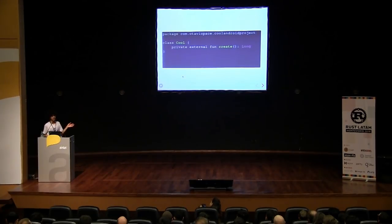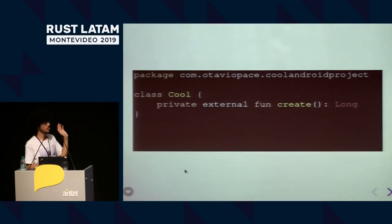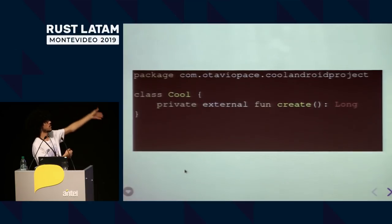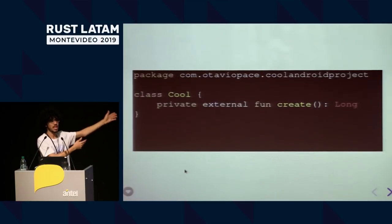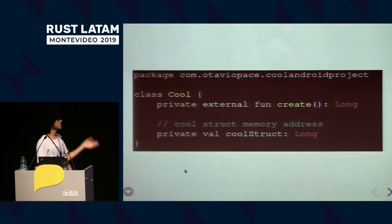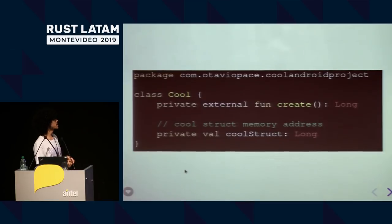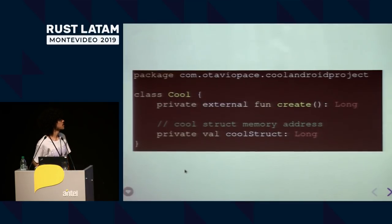On the Java side, you just need to create the signature of that external method — the class name, package name, method name, and return type. You can also create a private value that holds that struct's memory address. This is Kotlin, by the way.